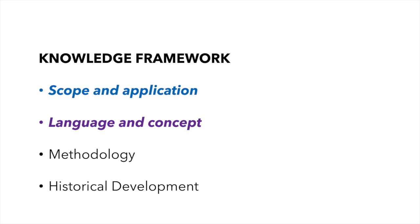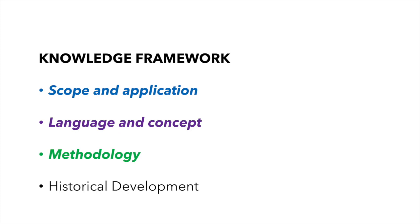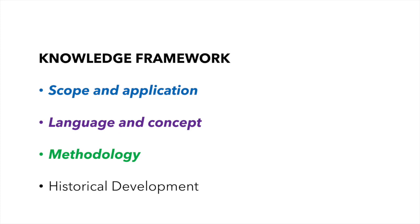Now let's consider the role of concepts and language in mathematics. There are key terms in math such as axiom, deductive rule, conjecture, theorem, proof. Math also uses precisely defined sets of symbols which stand for abstract things like sets and relations. But be careful though. These symbols can differ from culture to culture. For example, the Danes and the Swedes punctuate their currencies very differently.